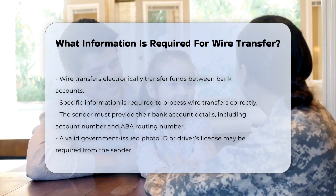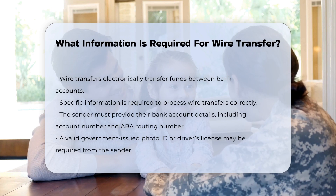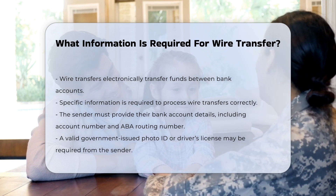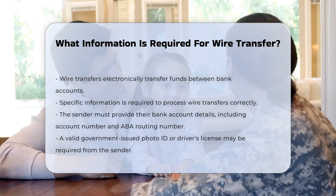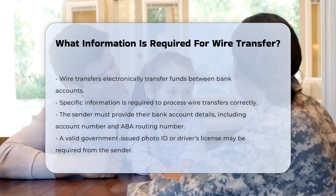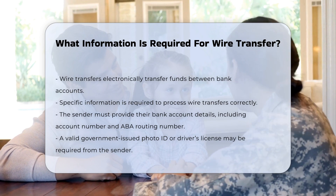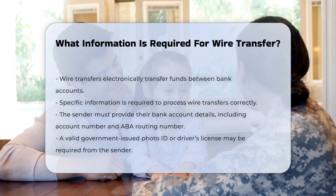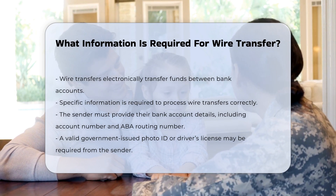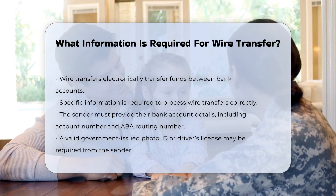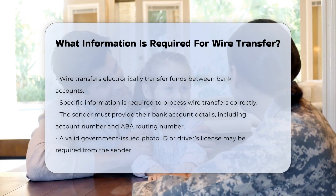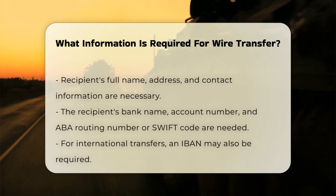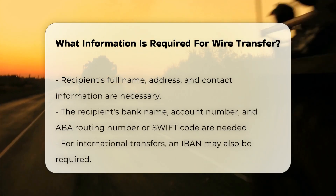Sender's information: The sender must provide their own bank account details, including the account number and the ABA routing number. In some cases, the sender may also need to present a valid government-issued photo ID or driver's license.